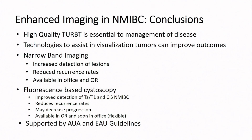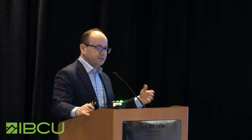In conclusion, for emerging enhanced technology and imaging: a high-quality TUR cannot be overestimated and is essential to management. These technologies are available or should be soon, and are good tools to help you do a better job. Both narrowband and fluorescent cystoscopy increase detection of lesions and translate into reduced recurrence rates. The narrowband is currently office-based and in the OR, and fluorescent technology will soon be available as an office-based procedure as well. Given the level of evidence, these are now supported by guidelines and should be incorporated into the management of non-invasive bladder cancer patients in your practice.